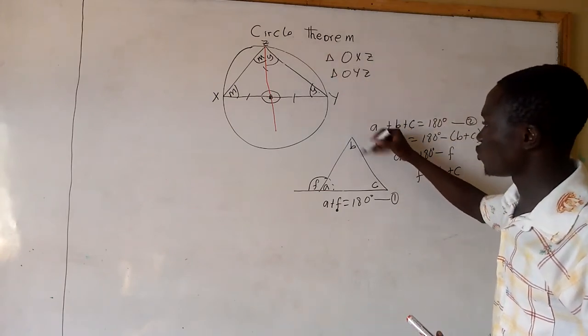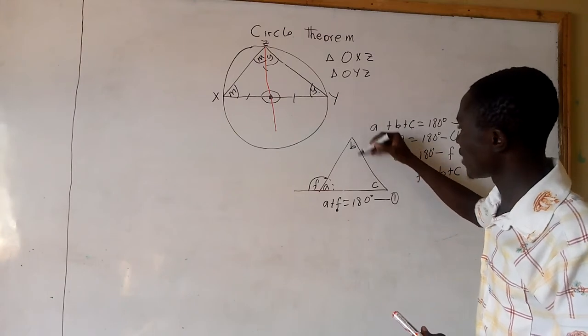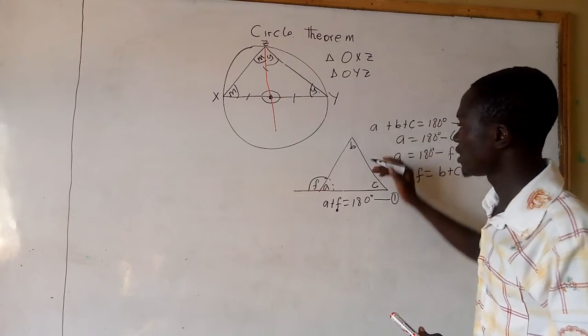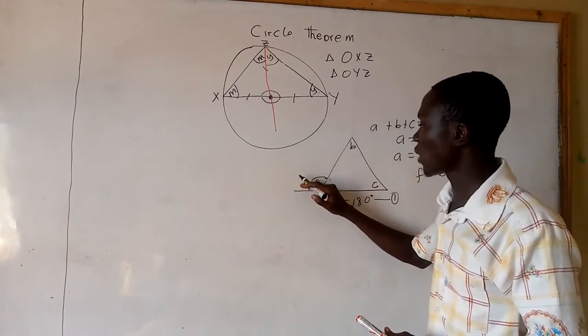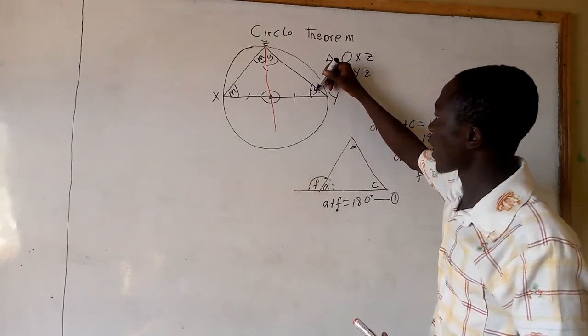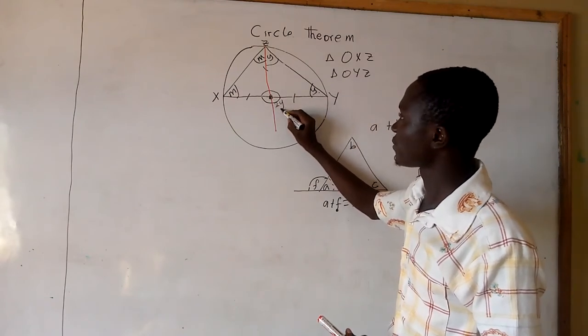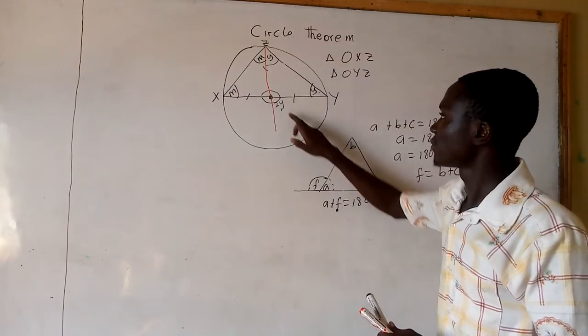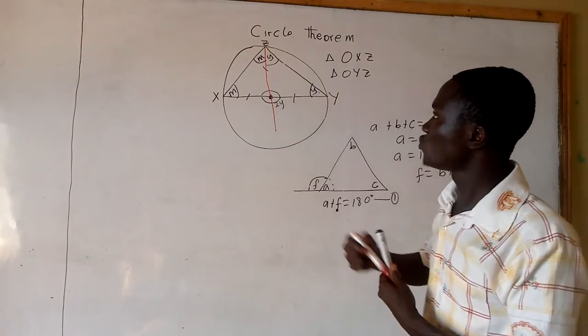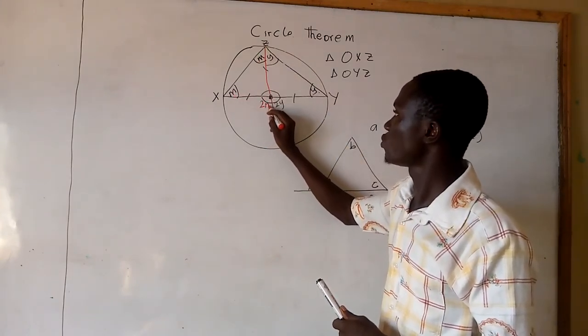And this one, we call it the sum of the opposite interior angles of a triangle is equal to the corresponding exterior angle. So here, Y plus Y will give us this angle 2Y. And here too, M plus M will give us this angle 2M.